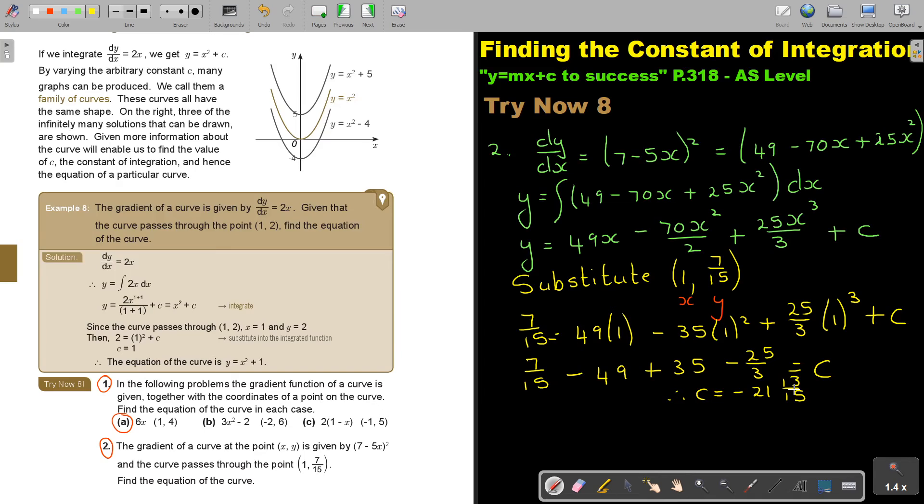So I'm going to say the final answer, I'm going to even put it in red. So therefore, y is equal to 49x minus 35x squared plus 25 over 3, x to the power of 3, and then that value of c. It's actually very, very easy.